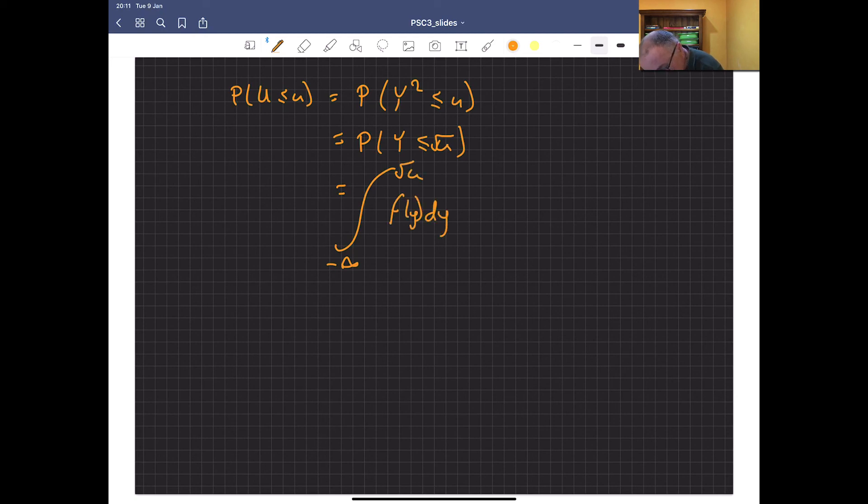We're going to integrate from minus infinity to the square root of u, f of Y dY, which is going to be from 0 to the square root of u, 1 dY, which equals Y from 0 to the square root of u, which equals the square root of u.